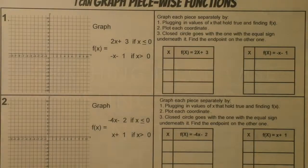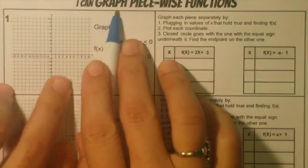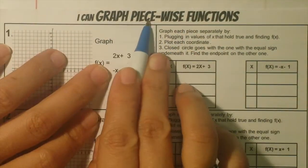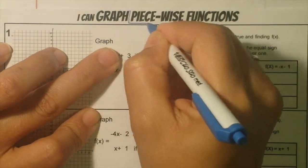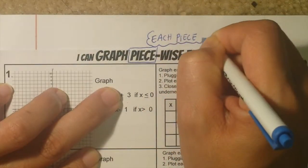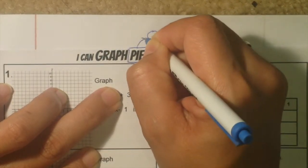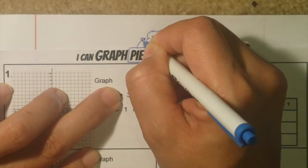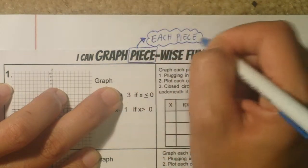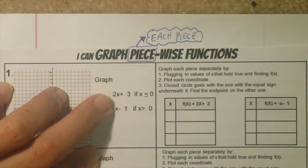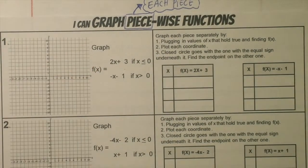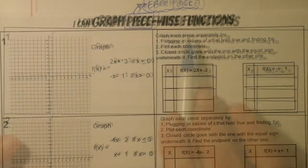Graphing piecewise functions is just like it sounds — it's really graphing each piece individually. We could do what we used to do with y equals mx plus b, but the best method to use to avoid mistakes is the following.